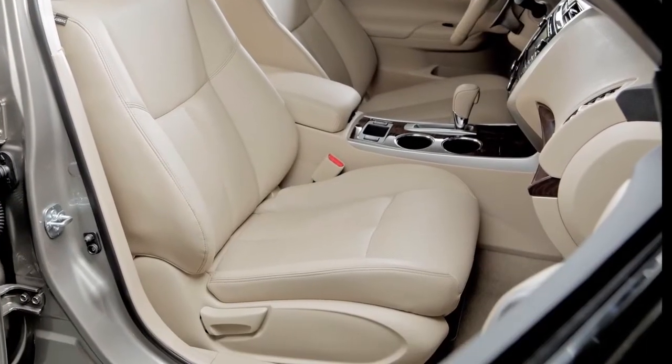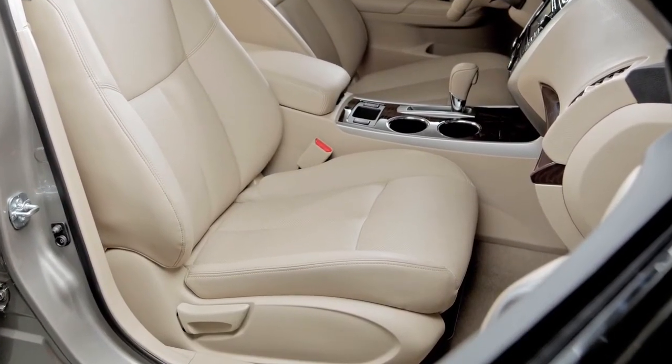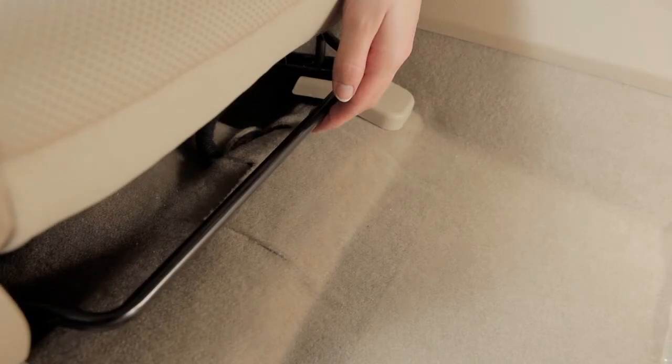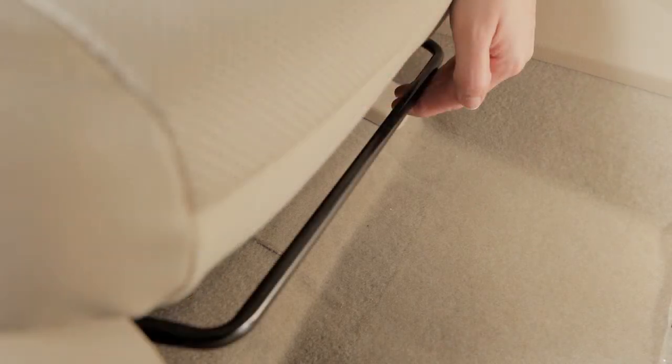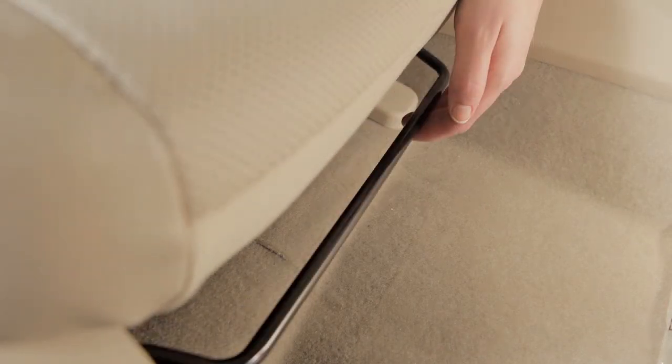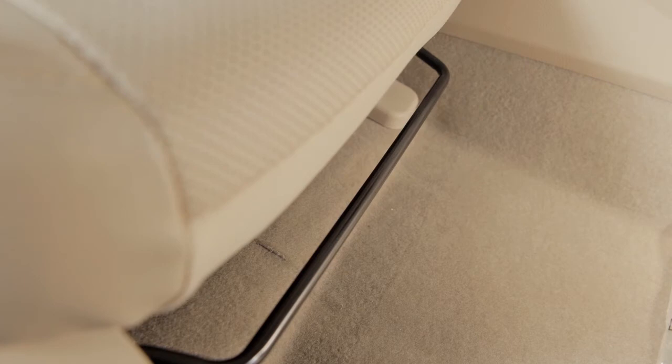If your vehicle is equipped with manual front seat adjustments, reach down and find this lever under the front seat. Pull up on it while you slide the seat forward or backward to a desired position. Release the lever to lock the seat in that position.